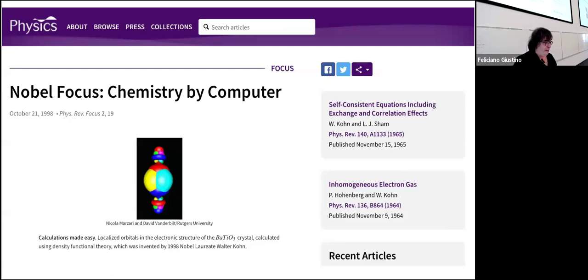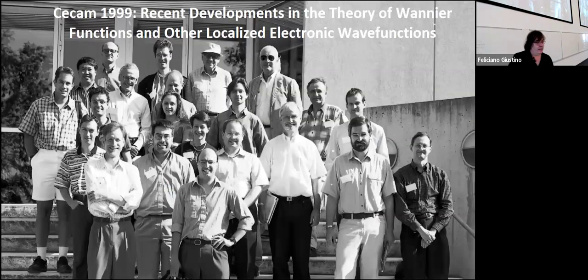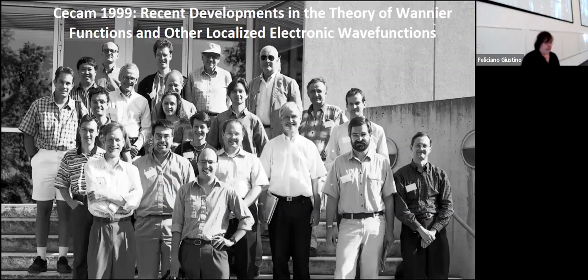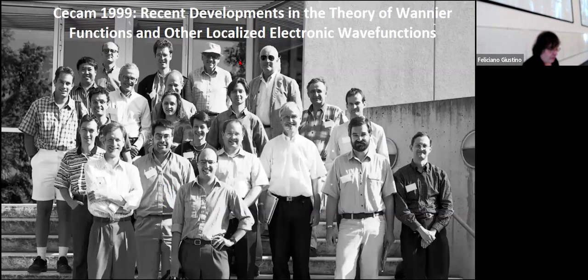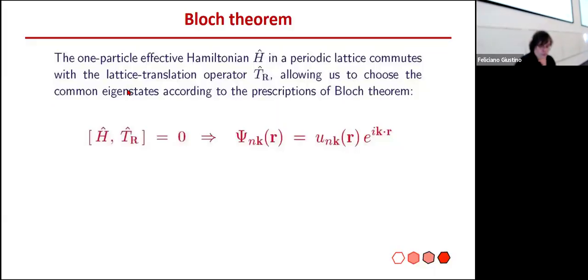This was when Walter Kohn won the Nobel Prize in Physics. Because we had these pretty pictures, I think the APS used the Wannier Functions in barium titanate for their piece. A year later, there was a CECAM workshop on recent developments in the theory of Wannier Functions and other localized electronic wave functions. You can spot there Walter Kohn, Raffaele Resta, Joshua Zak, David Vanderbilt, Thomas Arias, Pierino Silvestrelli, Stefan Goedecker, Ivo Souza — many others who contributed a lot to this field.